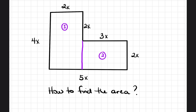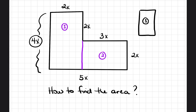All I have to do is figure out the length and width of each rectangle. For rectangle one, you can clearly see the length is 4x and the top of that rectangle is 2x. So I have length and width. The equation is: area equals length times width, so area equals 2x times 4x. I'm not doing the math yet — just showing how I'm identifying the numbers.